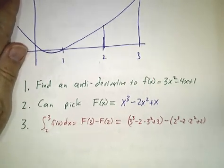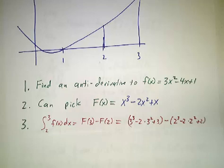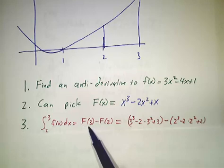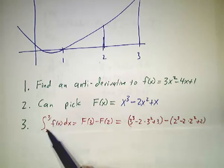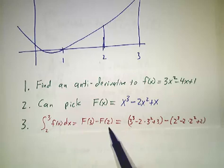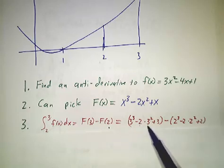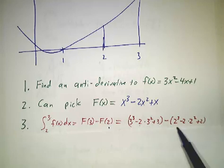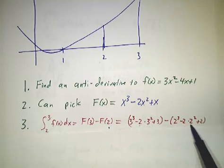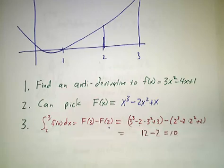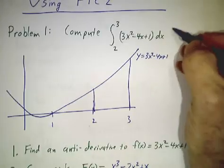The fundamental theorem of calculus says that to evaluate this integral, you take the antiderivative and evaluate it at 3 and at 2. Take the difference between the value at 3 and at 2. So F(3) is 3³ - 2(3²) + 3, and F(2) is 2³ - 2(2²) + 2. That's 12 minus 2, which gives you 10.